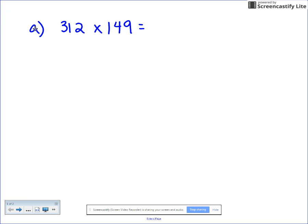Well first we're going to estimate our factors. 312 is pretty close to 300, and 149 is a little bit less than half—150 would be half—so we're going to make this 100. Three times one is three, let's add our four zeros: 30,000. Because we rounded both factors down, our answer should be a little bit higher than 30,000.